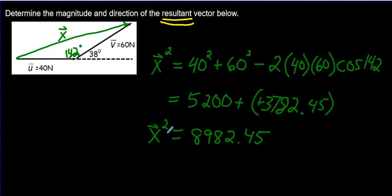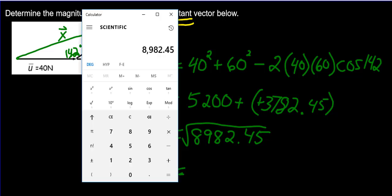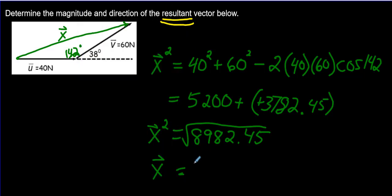That is almost our answer, but we have to remember we had a squared here. To get rid of the squared, we have to do the opposite of squaring, which is the square root. When you're subtracting and you're subtracting a negative, you're going to end up adding these two numbers. 5,200 plus 3,782.45, we get 8,982.45. Let's find the square root of this, just push the square root button. 94.8, and in this case the units were newtons. So we've just come up with the magnitude.